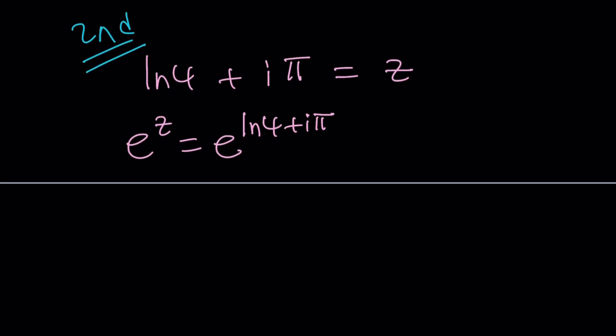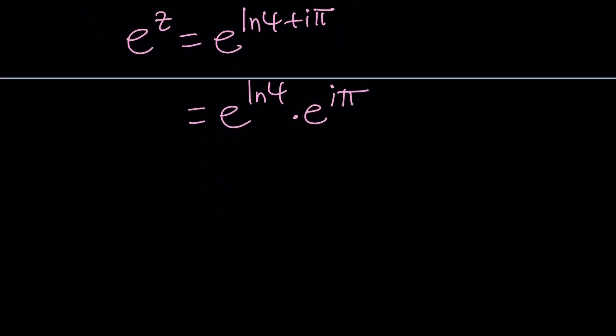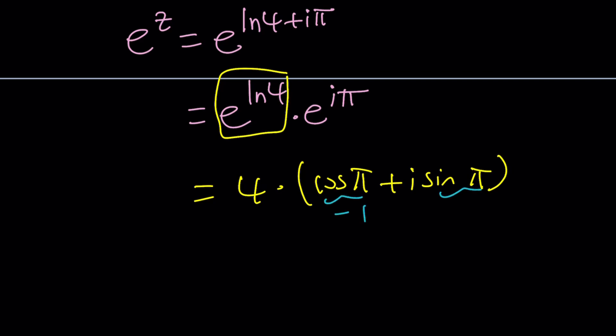Now, we can go ahead and separate this into e to the ln 4 times e to the i pi. Awesome. What is that, though? So what's the deal? e to the ln 4 is equal to 4. But this is the funnest part. e to the i pi by Euler's formula is equal to cosine pi plus i sine pi. Wait a minute. Cosine pi is equal to negative 1. And sine pi is 0. So this is equal to negative 4. e to the z happens to be negative 4. What does that mean?